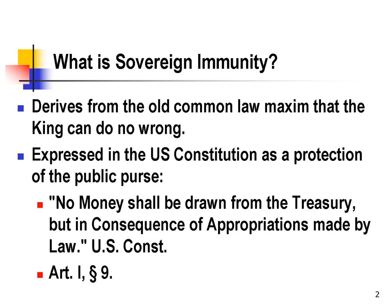Before we can sue the government, we have to look at sovereign immunity. Sovereign immunity is an old concept that comes from the common law — the notion that the king could do no wrong. It really reflected the power that the king had and that there really was no judicial process that could reach the king.